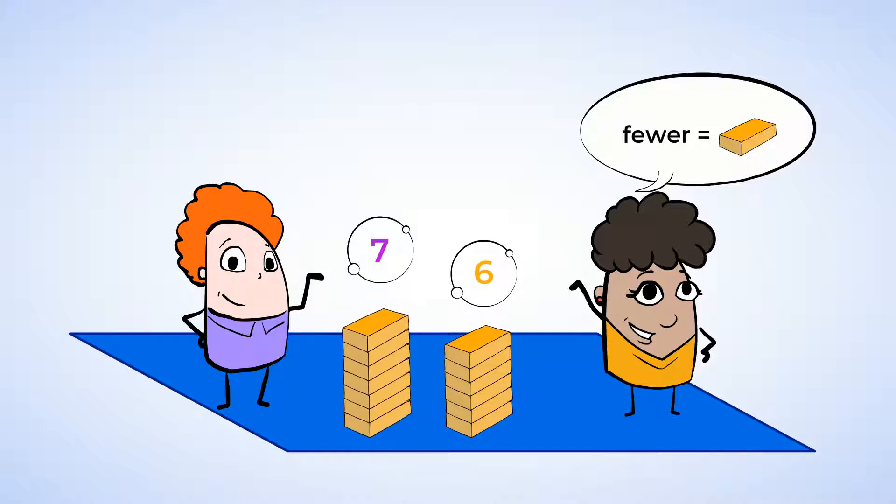Well, Eric's stack of seven is taller, and Latifah's stack of six is shorter. So Latifah has fewer blocks than Eric. Six blocks is fewer than seven blocks, so six is less than seven.